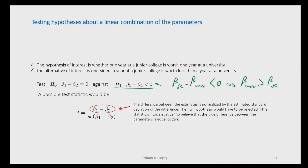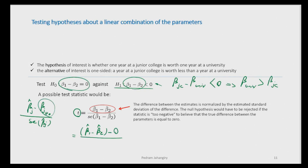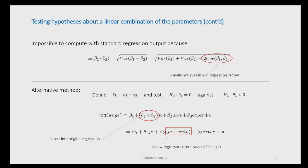Now let's construct our usual t-statistic: (β̂ minus the value under the null) divided by the standard error. Here, instead of a single β̂, we have a combination: (β̂1 minus β̂2 minus 0) divided by the standard error of (β̂1 minus β̂2). The numerator is fine since β̂1 and β̂2 are observable, but the denominator — the standard error of (β̂1 minus β̂2) — depends on the covariance between them.